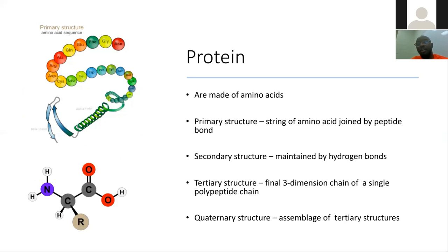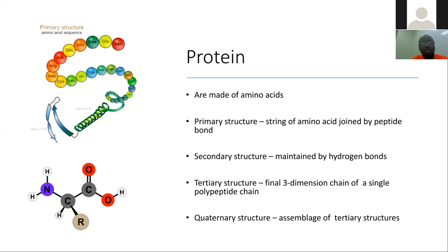For protein, we have four structures. The primary structure is a string of amino acids joined together. The secondary structure is maintained by hydrogen bonds — for example, the alpha helix and the beta sheets. The tertiary structure is the three-dimensional conformation of a single polypeptide chain. When two or more tertiary structures join together, you get the quaternary structure of a protein.